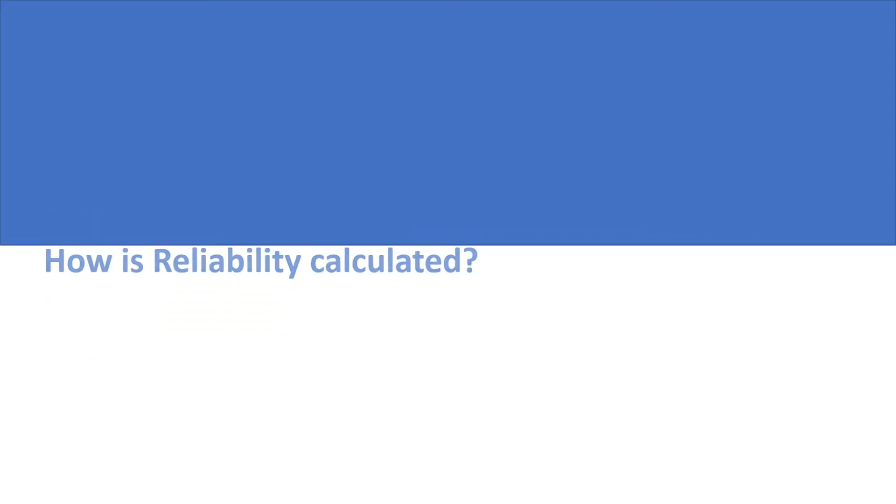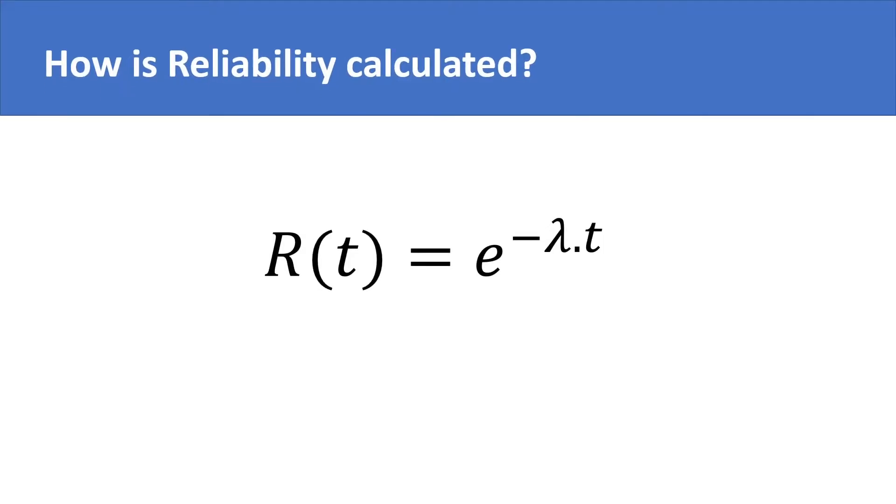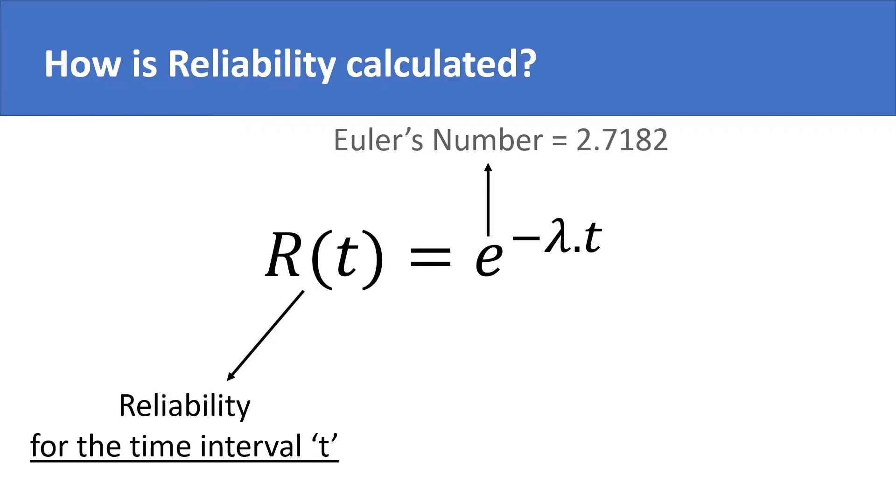The formula for calculating reliability is shown. You can see how reliability is a function of time, so as to define reliability of a machine based on the time period or time interval over which its reliability is needed to be calculated. It is calculated from Euler's number, which is a constant whose value is 2.7182 raised to the power of a product.